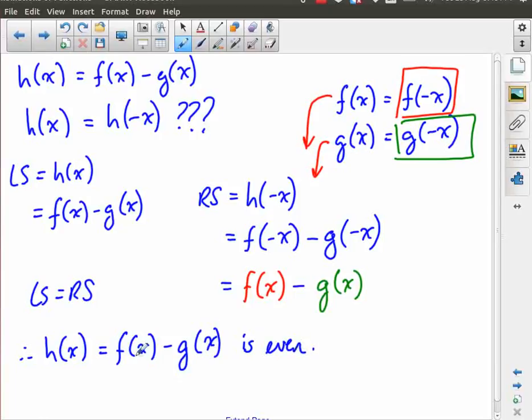Remember that even means you have this reflective symmetry in the y-axis. So if this one is symmetric in the y-axis, and if this one is symmetric in the y-axis, when you subtract the two of them, you're going to end up with something that is also symmetric in the y-axis. And that's actually an interesting result.